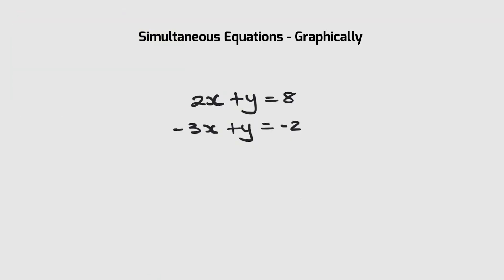So the pair of simultaneous equations that we're going to look at today are 2x plus y equals 8 and minus 3x plus y is equal to minus 2. Now as the title suggests, we're going to solve this graphically, which means we're going to draw it on a graph.